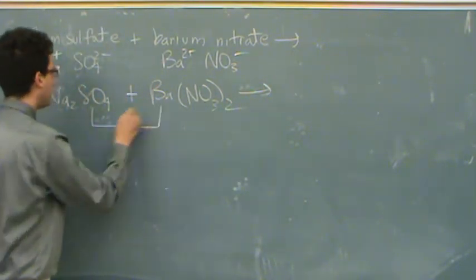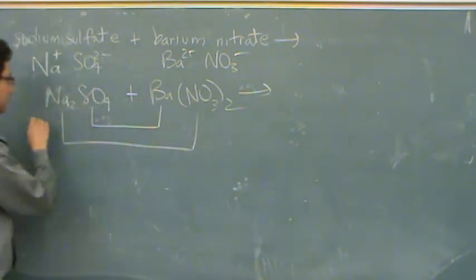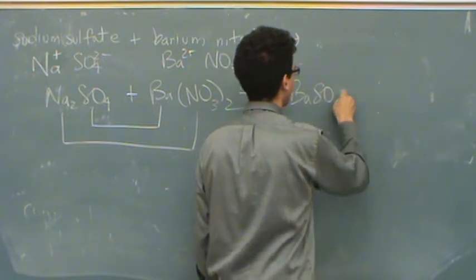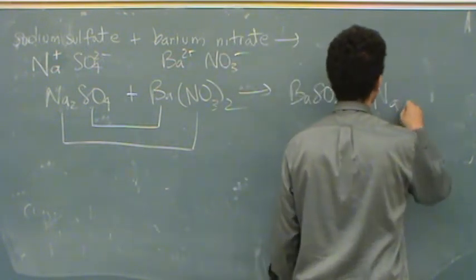So the sulfate will go with the barium and the nitrate, or the sodium will go with the nitrate. So this is barium sulfate plus sodium nitrate.